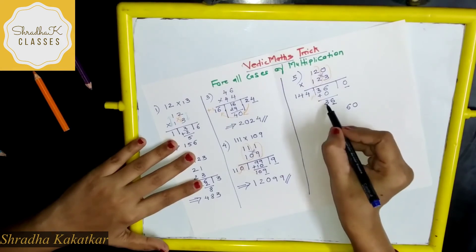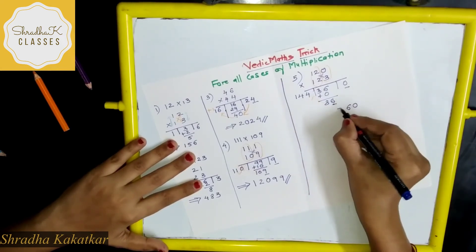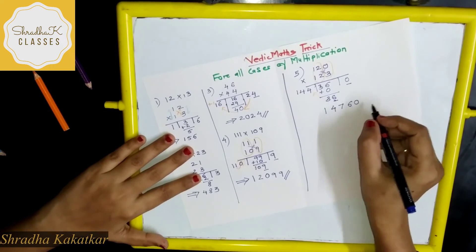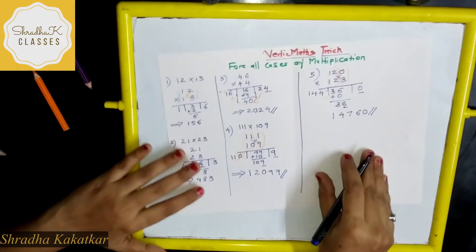So 4 plus 3, 7. 4 and 1. So this is the answer.